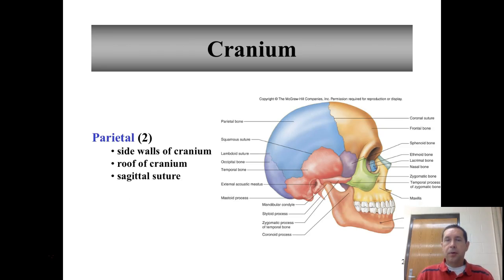The next bone is the parietal bone, and there are two of those — a left and a right. They make up the sidewalls of the cranium and the roof of the cranium, and they're connected to each other by the sagittal suture.